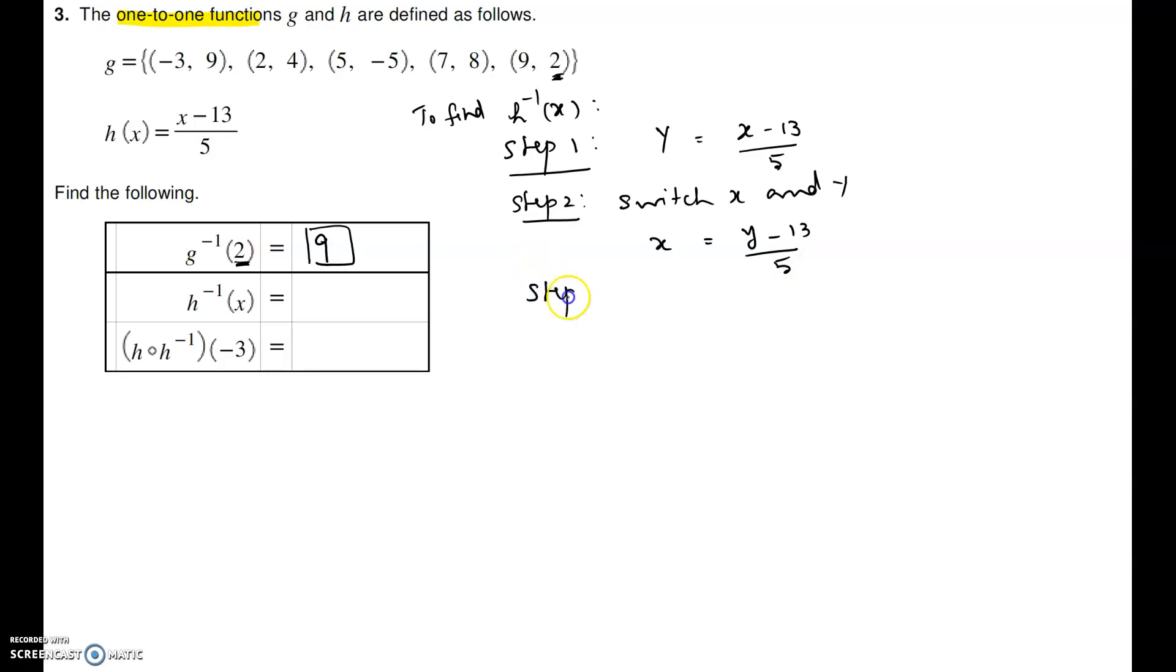Step 3 is to solve for y. To solve for y, you multiply both sides by 5. So x equal to y minus 13 over 5. Multiply both sides by 5 to clear the fraction.